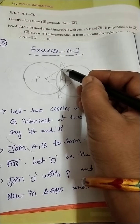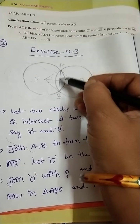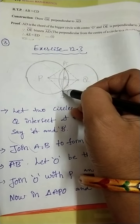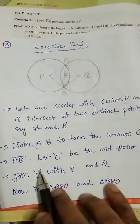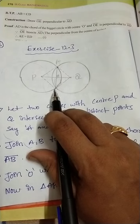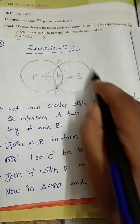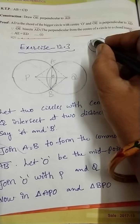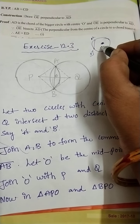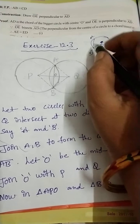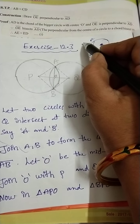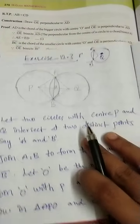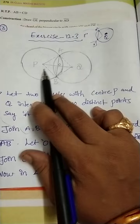Now after getting these intersecting points, join A and B. It will give the common chord of the circle. For the circle with center Q, AB is the chord. Similarly, for the circle with center P, AB is also a chord. So AB is the common chord for both circles.